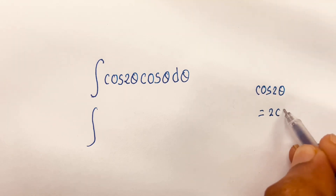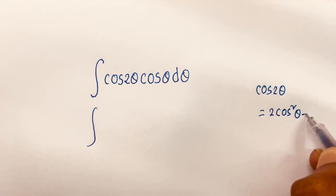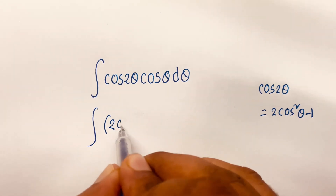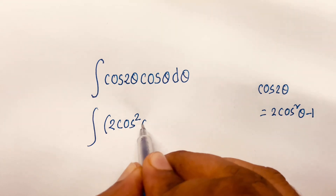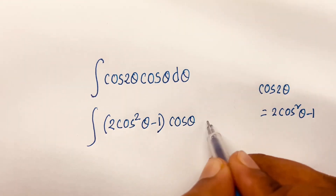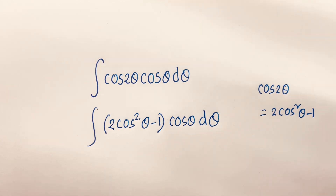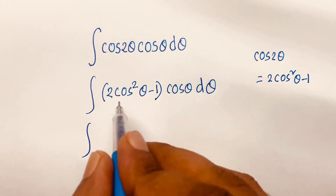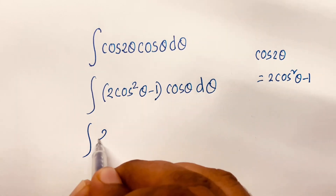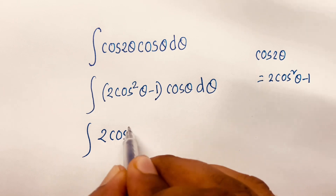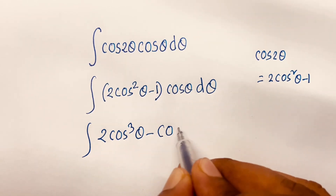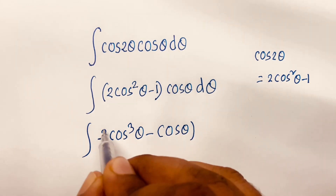We know that cos(2θ) equals 2cos²θ - 1. According to this rule, the expression becomes the integral of (2cos²θ - 1)·cos(θ) dθ, which expands to the integral of 2cos³θ - cos(θ) dθ.